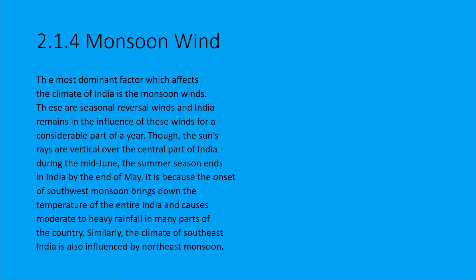The fourth factor is monsoon wind. This is India's main climate influence. The sun's rays are vertical in Central India in June during the summer season. This is why we have the South-West Monsoon, which influences the temperature and brings moderate to heavy rainfall across India.